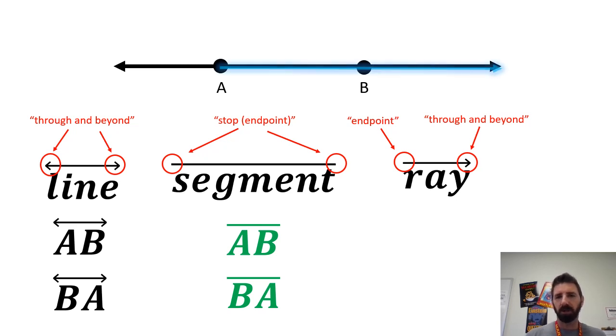For instance, if we wanted to talk about this ray going from A through B and on forever to the right, we would name it AB where we have no symbol above A but an arrow above B. If we wanted to go the other way from B through A,